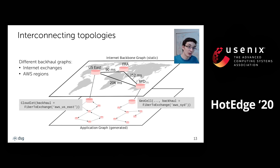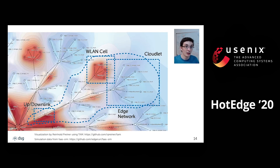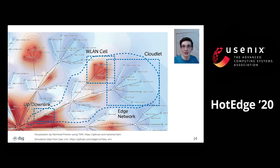These generated topologies can be used in various ways. Here you can see an IIoT topology generated with our tool in a visualization showing bandwidth utilization data from a network simulation, with the individual cells of the IIoT example clearly visible.